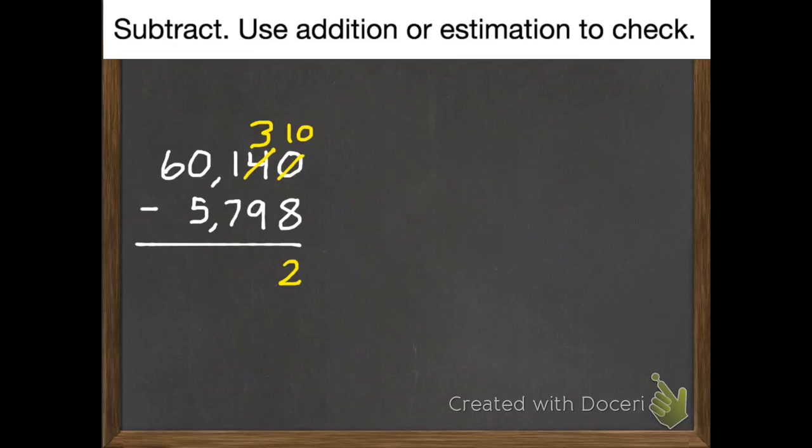We do our tens. 3 subtract 9, which I can't do. So I need to borrow from the hundreds. Now there's no hundreds. But we can add 10 tens to our 3. Now we can subtract our tens. 13 subtract 9 is 4.